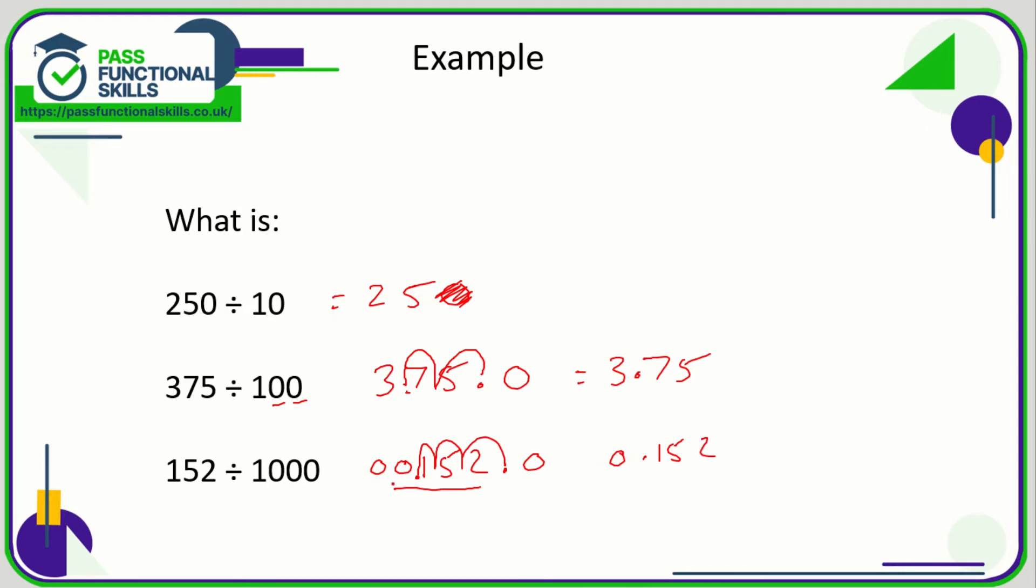That zero on the end - well, these two zeros I can include if I want to, but obviously when you're writing a number, hopefully you can appreciate that we only need one zero in front of a decimal point, and any zeros after the final number can be removed as well. So 0.152 is the right answer.